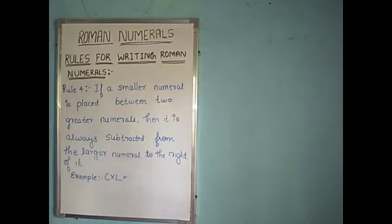So, what is the fourth rule? If a smaller numeral is placed between two greater numerals, then it is always subtracted from the larger numeral to the right of it.